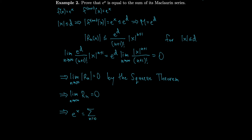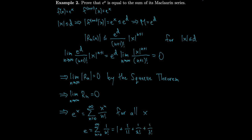So e^x equals the sum from n=0 to infinity of x^n/n!, which converges for all x. Plugging in x = 1, we get e equals the sum from 0 to infinity of 1/n!, which is 1 + 1/1! + 1/2! + 1/3! and so on. This gives us a way of computing e.